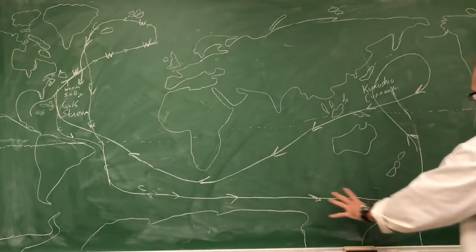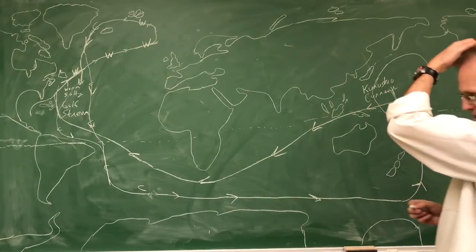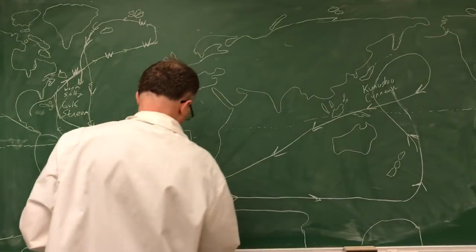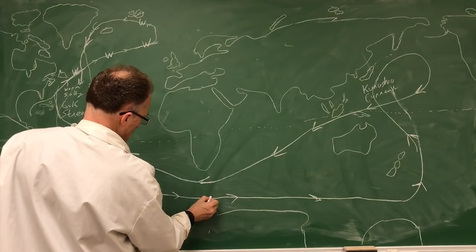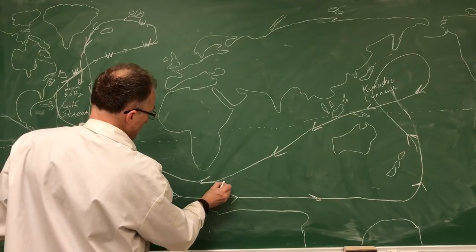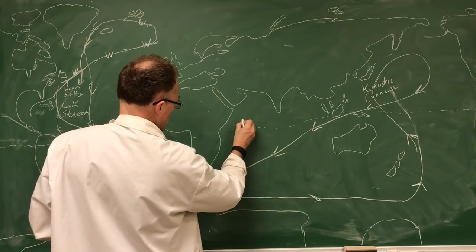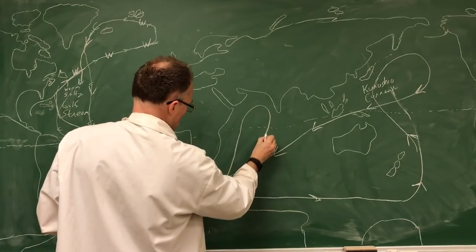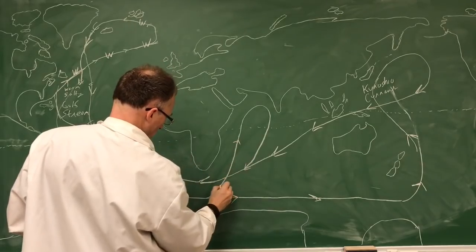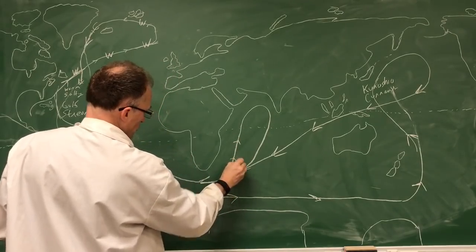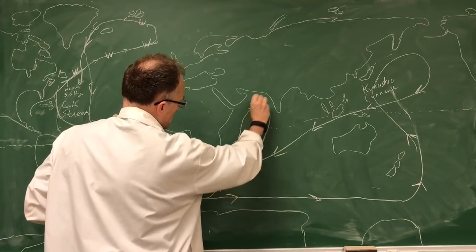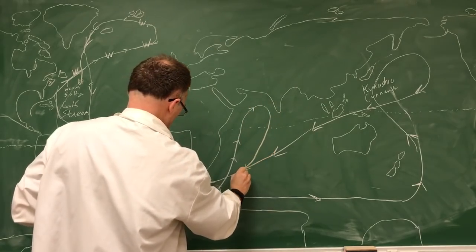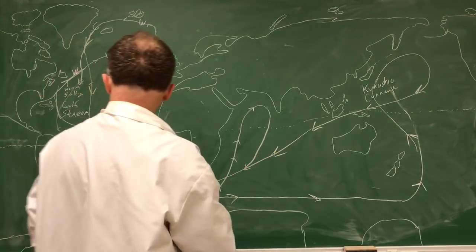There's a loop that breaks off here and goes up into the Indian Ocean and circulates back down and joins this. So this deep water surfaces, it's warm and salty, comes off here in the Indian Ocean and circulates back down, joining this.